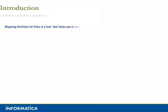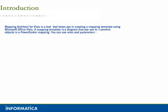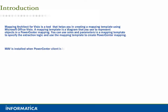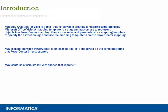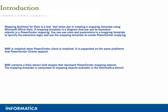Mapping Architect for Visio is a tool that helps you in creating a mapping template using Microsoft Office Visio. A Mapping Template is a diagram that you use to represent objects in a PowerCenter mapping. You can use rules and parameters in a mapping template to specify the extraction logic and use the mapping template to create PowerCenter mappings. MAV is installed when PowerCenter client is installed, and is supported on the same platforms that PowerCenter clients support. MAV contains a Visio stencil with shapes that represent PowerCenter mapping objects. The mapping template is comprised of mapping objects available in the Informatica stencil.